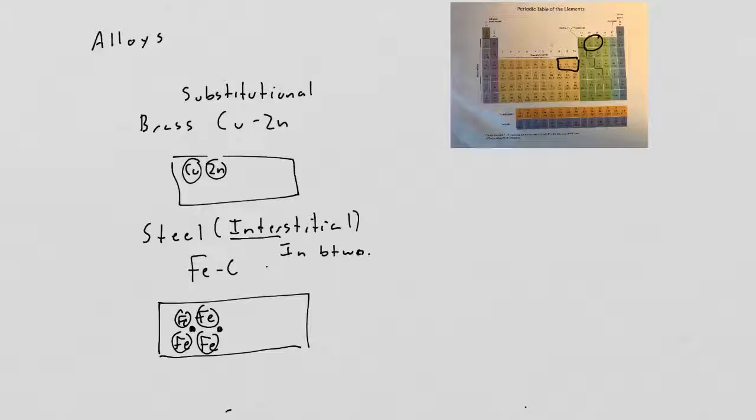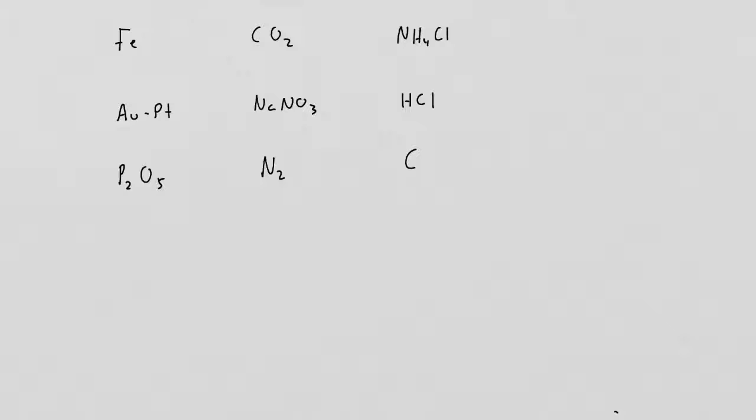The last thing you should be able to do is compare them for multiple choice questions. They'll ask which will conduct as a solid. The only thing that conducts as a solid are things that have a mobile charged particle—a metal or an alloy. Iron will conduct as a solid, copper will conduct, and this alloy (white gold—platinum mixed with gold) will conduct because these guys have mobile electrons.